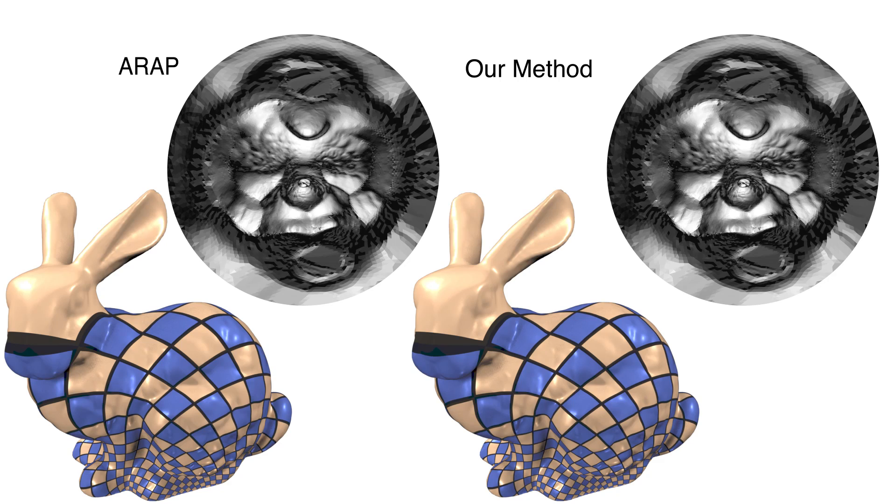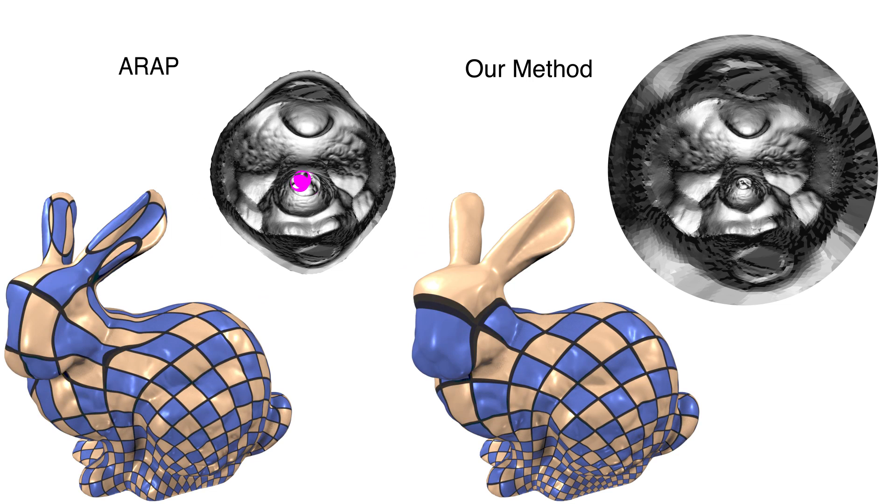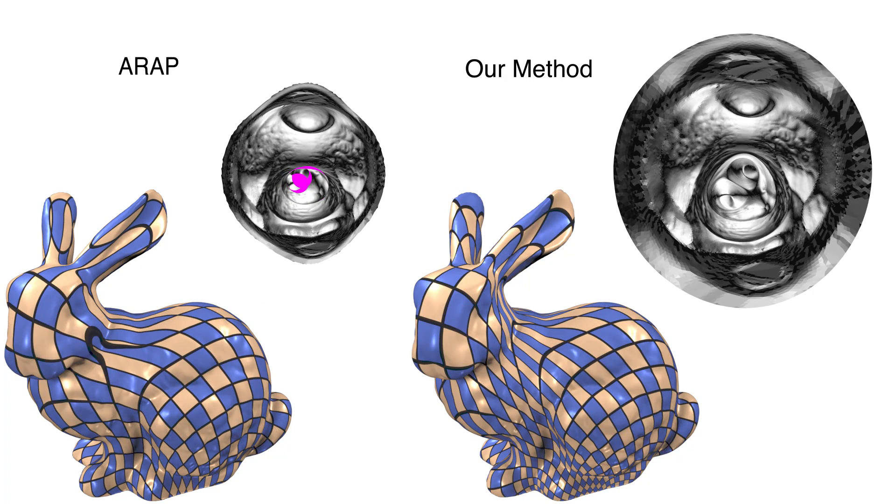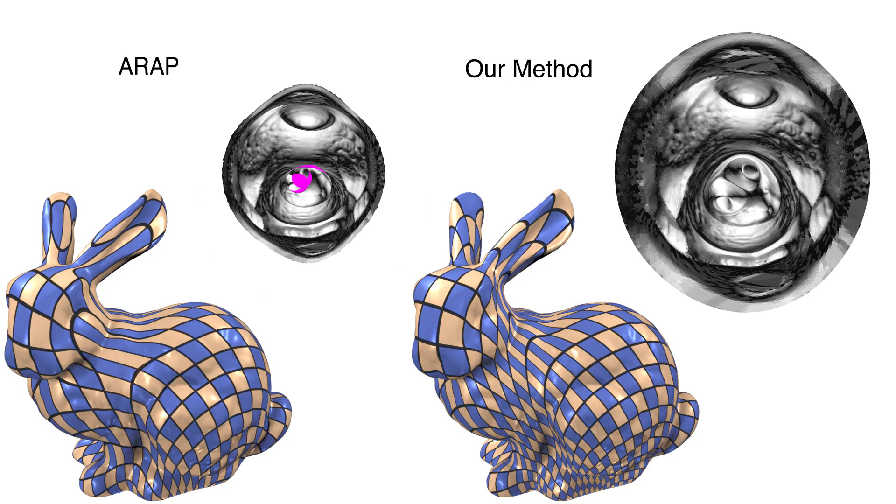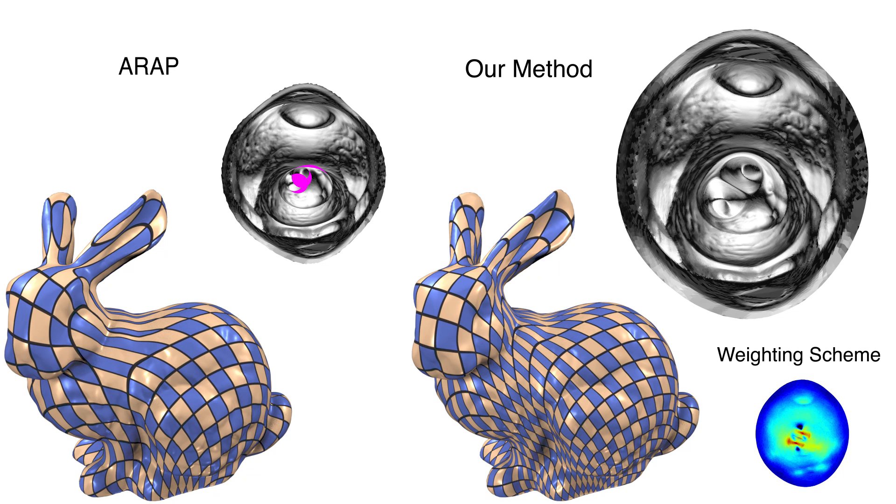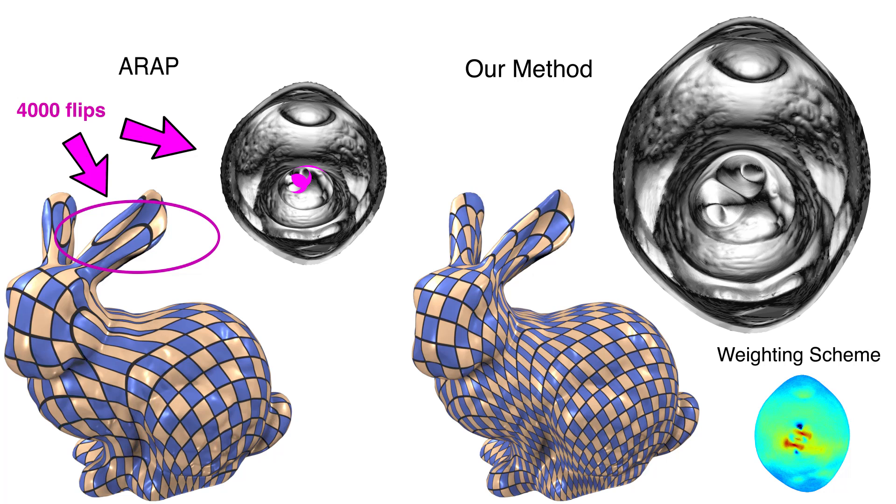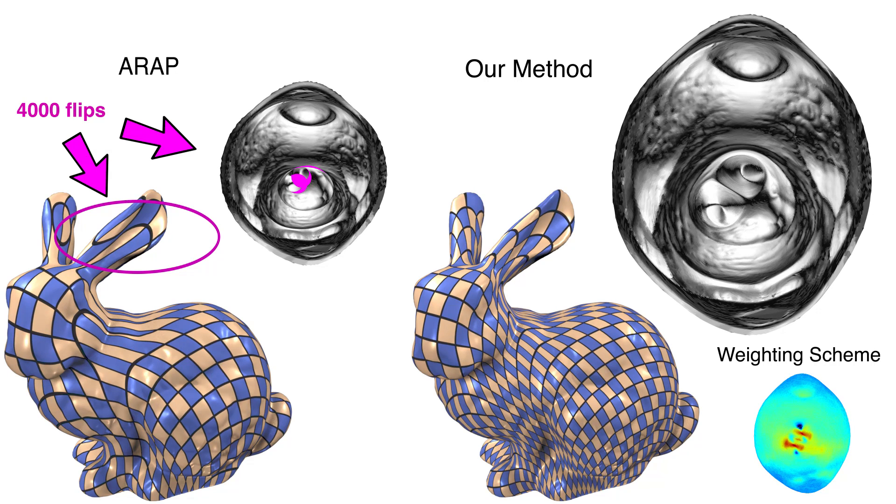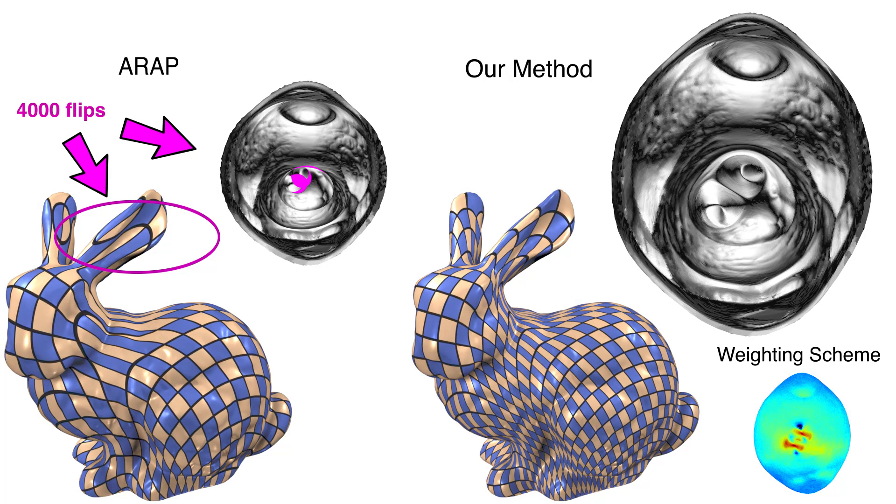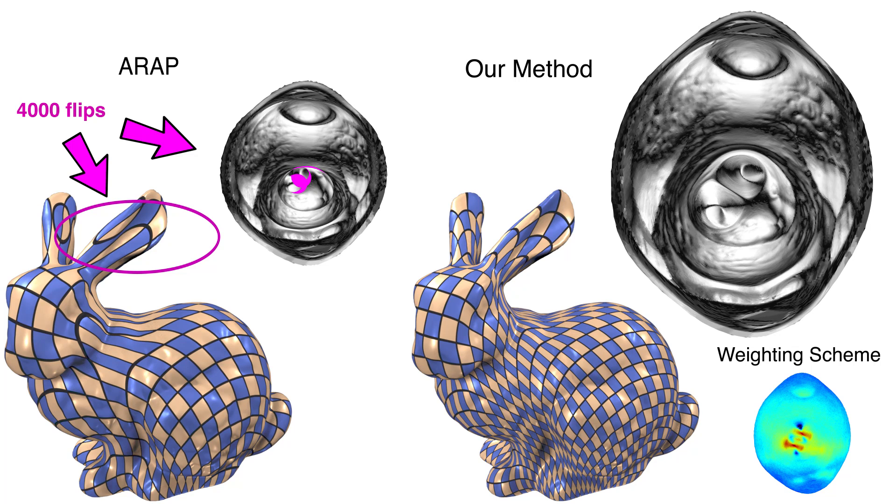Our method iteratively computes a locally injective map by minimizing a simpler energy, enriching it with a matrix reweighting scheme that makes it mimic complex energies that forbid flips. The reweighting is similar to commonly used greedy stiffening, but it is done in the gradient domain, allowing us to formally prove that the algorithm converges to a local minimum and always produces inversion-free maps.